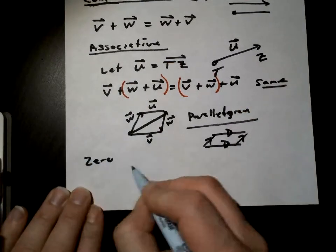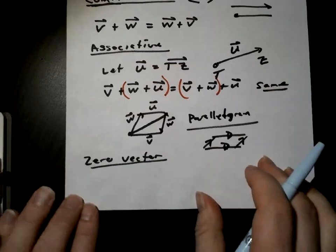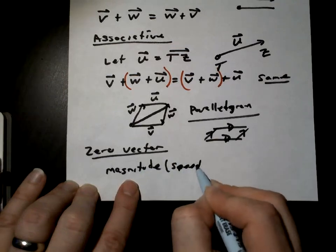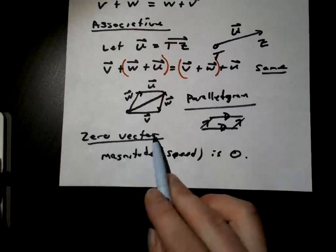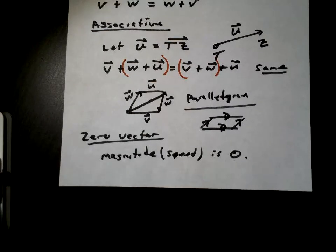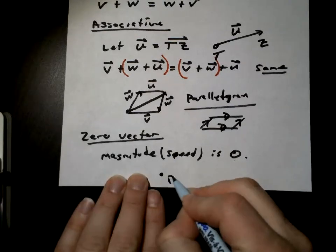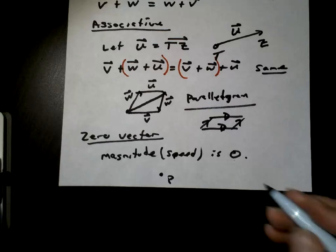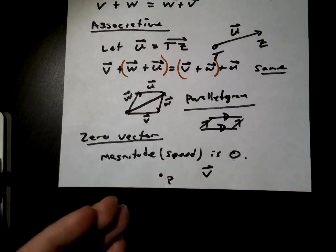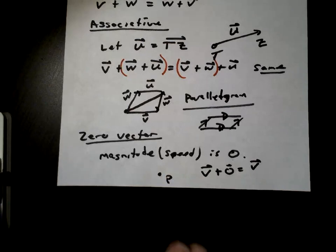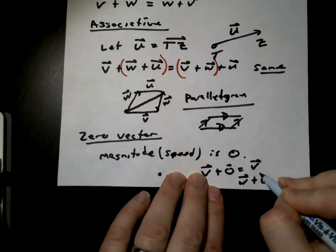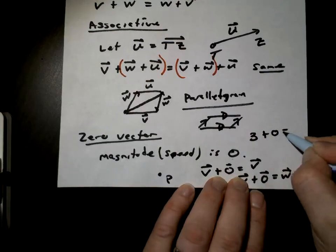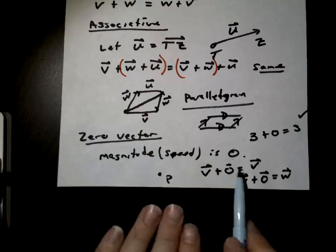Let's talk about the zero vector. A zero vector has a magnitude of zero — think of speed equals zero. So a zero vector means your vector is zero. If you take vector V plus the zero vector, you still get V. If you take vector W plus the zero vector, you still get W. It's like adding zero to a number — it doesn't change anything.